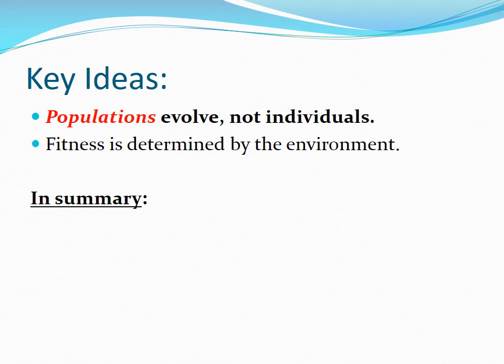Your reproductive fitness — the number of children you have — is determined by the environment. If you are adapted to your environment, you will have more offspring and your traits will be passed along more than those of someone who is less fit.